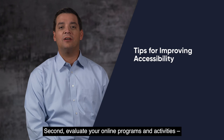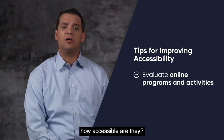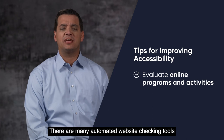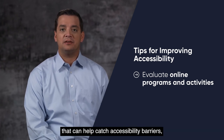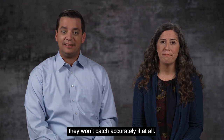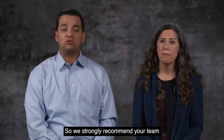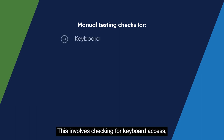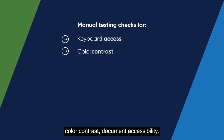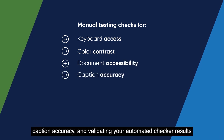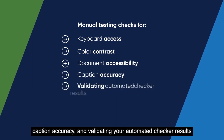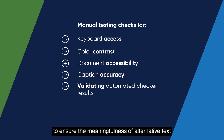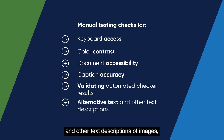Second, evaluate your online programs and activities. How accessible are they? There are many automated website checking tools that can help catch accessibility barriers, but there are lots of things they won't catch accurately, if at all. So we strongly recommend your team also makes a regular practice of manual testing. This involves checking for keyboard access, color contrast, document accessibility, caption accuracy, and validating your automated checker results to ensure the meaningfulness of alternative text and other text descriptions of images, field labels, and others.